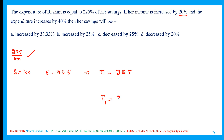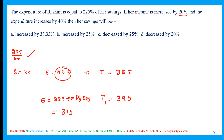The new income is 390, and expenditure is increased by 40 percent. New expenditure is 225 plus 40 percent of 225. 40 percent of 225 is 90, so 225 plus 90 equals 315.